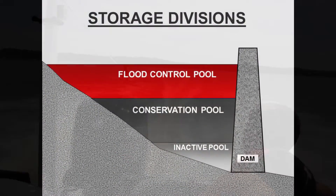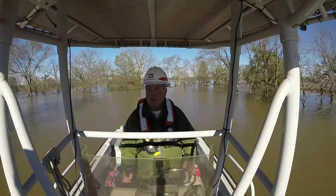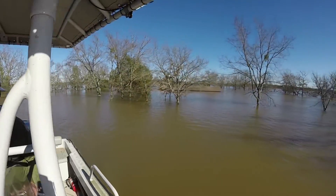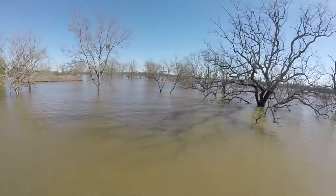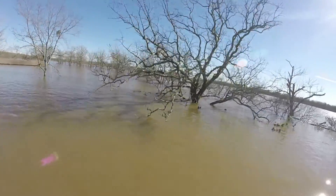Last, but certainly not least, is the flood control pool. This area is normally kept empty and is the space that catches inflows above the conservation pool which may cause flooding downstream if released.